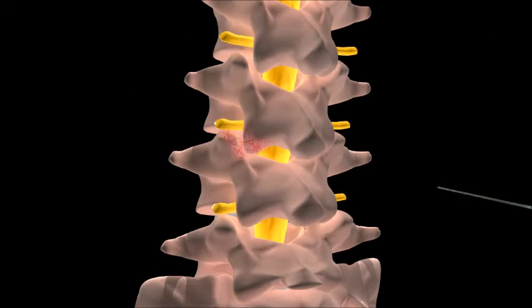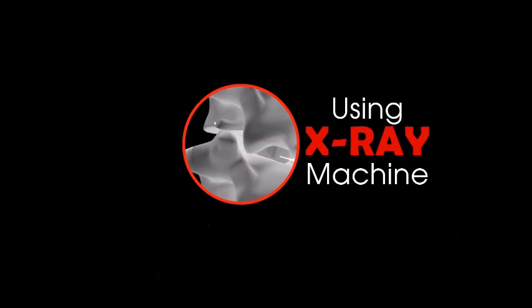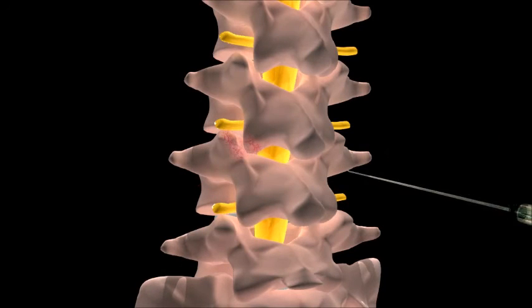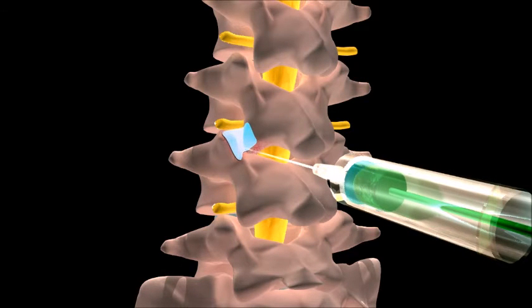He will then use a special x-ray machine to guide the needle accurately into the lumbar facet joint. A mixture of local anaesthetic and steroid is injected slowly into the joint.